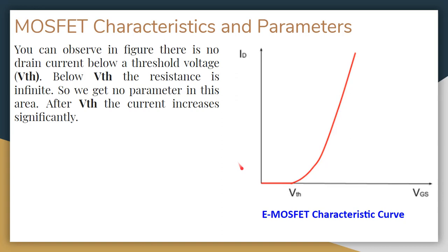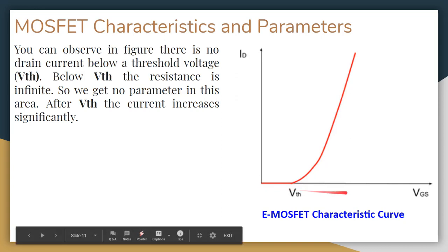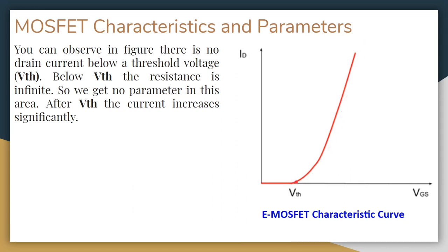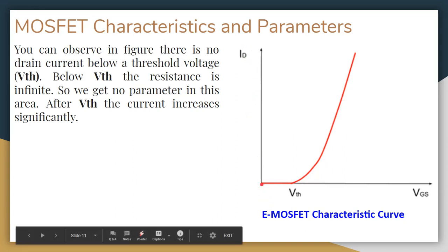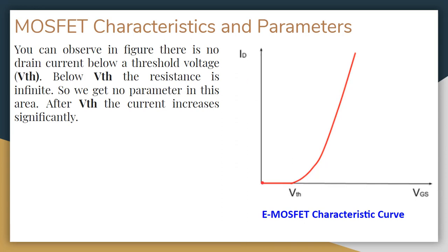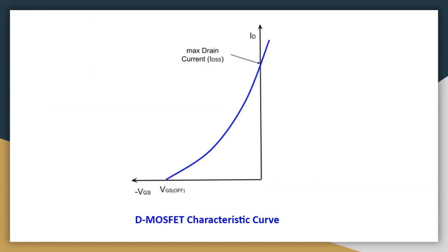These are the characteristic curves of an E-MOSFET. You can observe there is a threshold voltage — below the threshold voltage there is almost zero current. When we increase the potential between the gate and the source above the threshold, current gradually and then steeply increases. If there is no gate-to-source voltage, no drain current will flow.